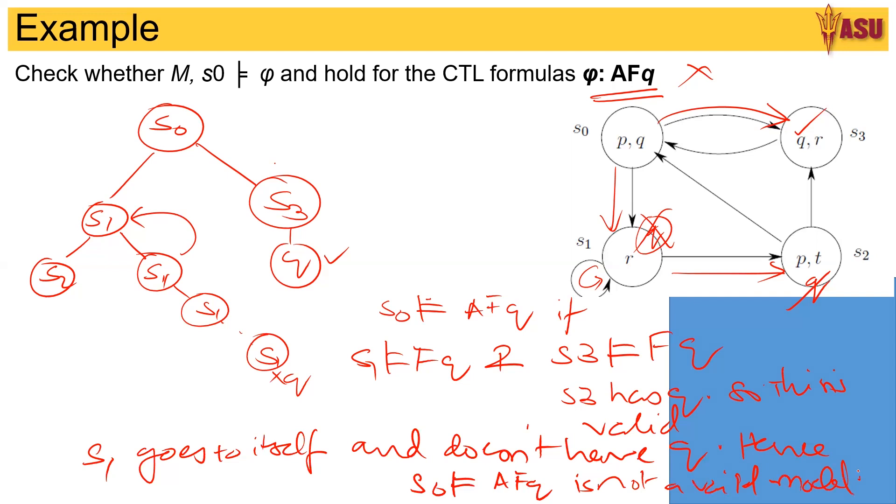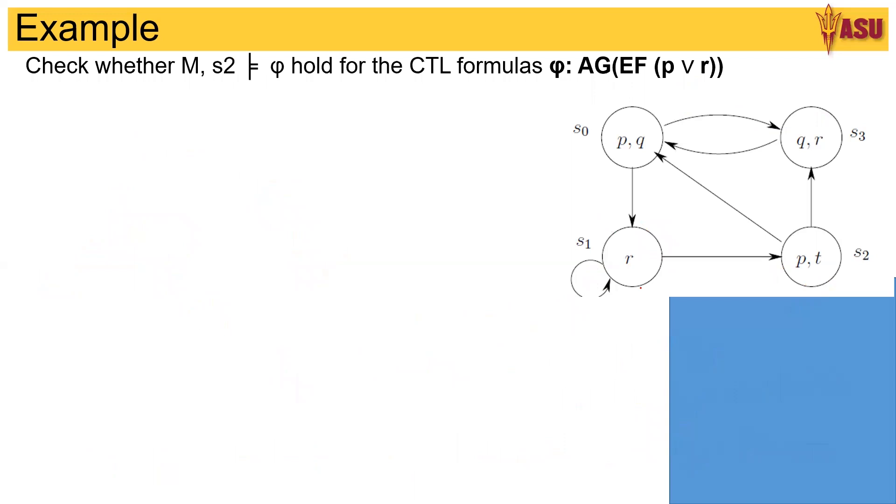Now let's look at another example, a little more complex. AG(EF(p ∨ r)). That is all paths globally will have from s2.